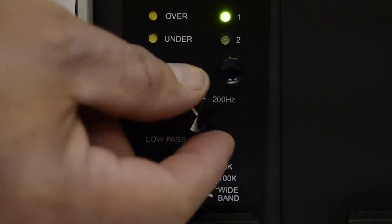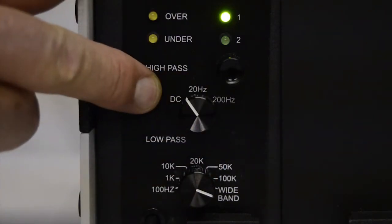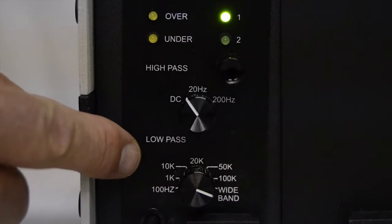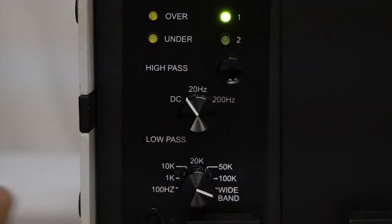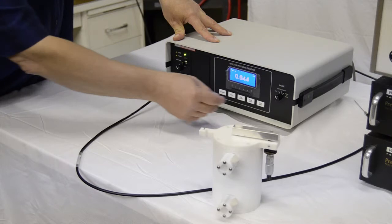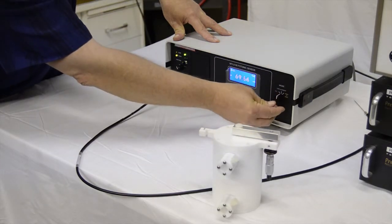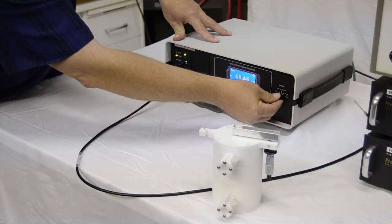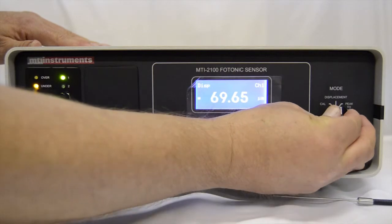It's also important to have the high-pass filter set to DC in all cases. And for this measurement, I would set the low-pass filter to wide band. Finally, I would put the mode switch into the cal position.